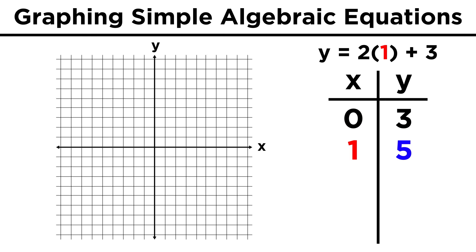If x is one, y is five. If x is two, y is seven. So we can see the relationship between x and y begin to emerge, even just by looking at the numbers, every time x grows by one, y grows by two, because of this two in the equation.